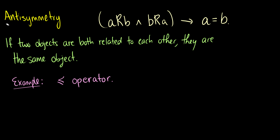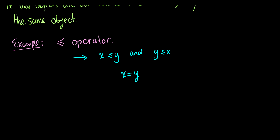For instance, we have the less than or equal to operator. So if we have x less than or equal to y, and y less than or equal to x, then we're going to get that x is equal to y — because that's the only way these two values make sense. And another operator we can show this with is the subset relation. If a is a subset of b and b is a subset of a, then the sets a and b are equal to each other by definition, because all of a is contained within b and all of b is contained within a. So this is the anti-symmetric property.